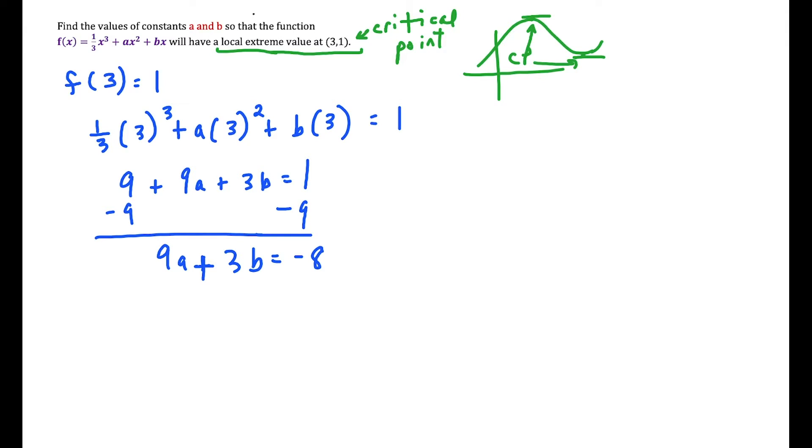So the hidden information in this statement is that since this is a critical point, the first derivative of f at x equals 3 is going to equal 0. That tells us then, now that we have this one equation here, that we have to make use of this piece of information to set up our second equation. So the first thing we should do is find out what is f'(x).